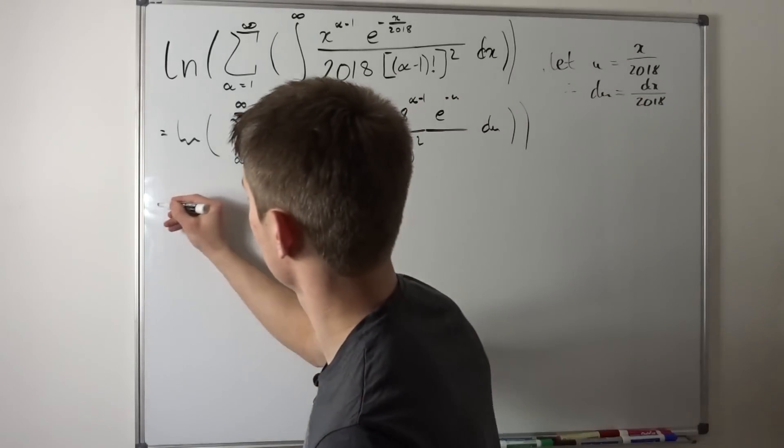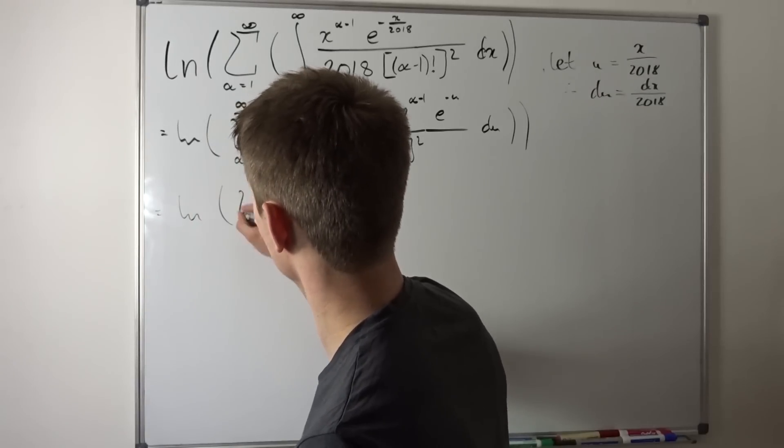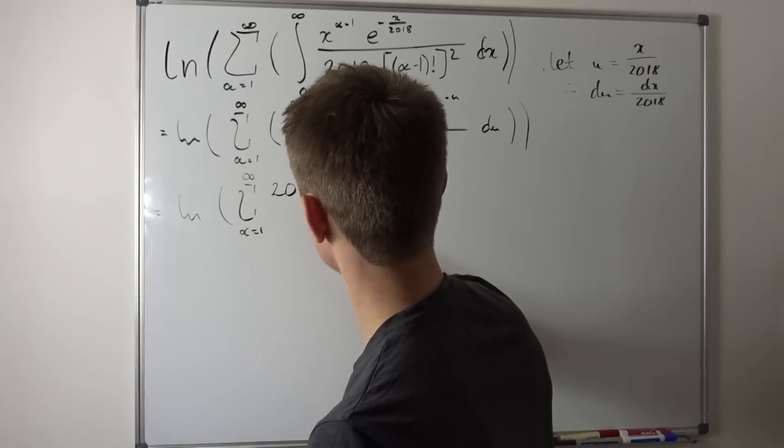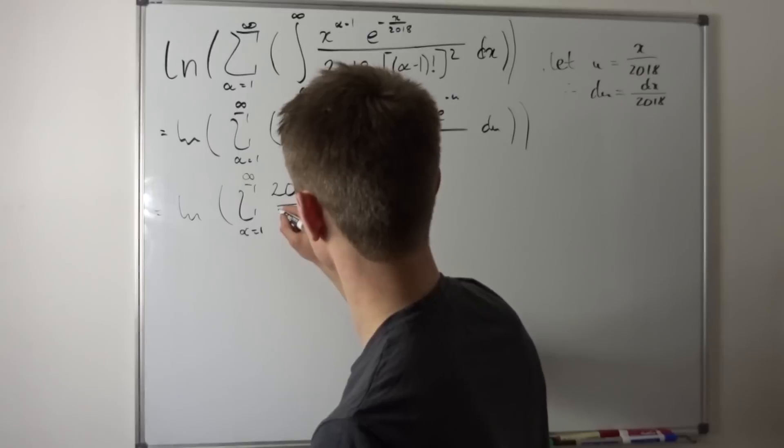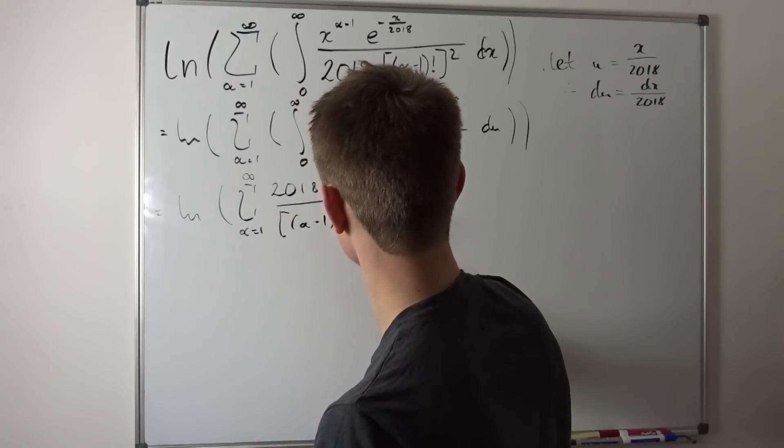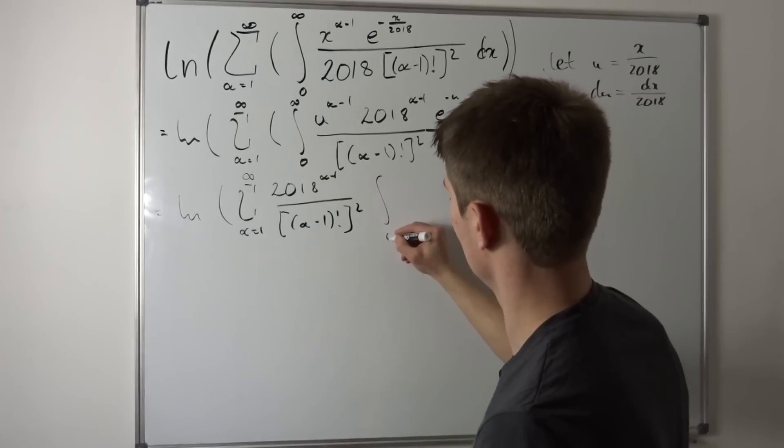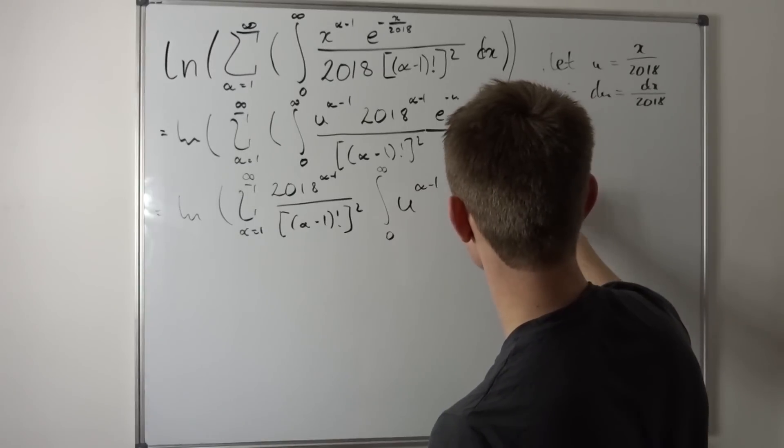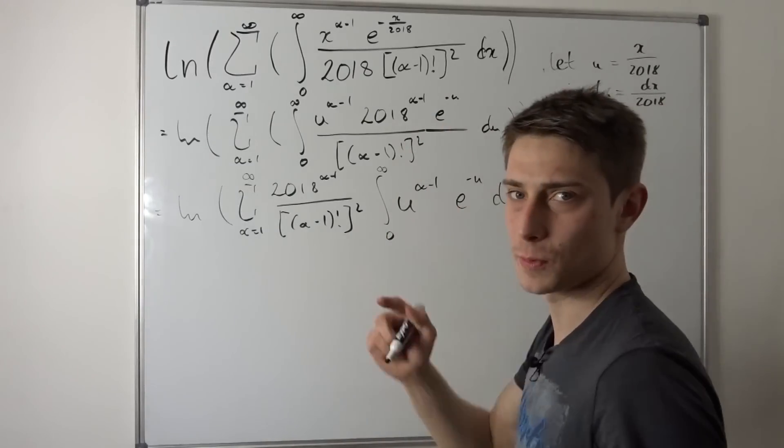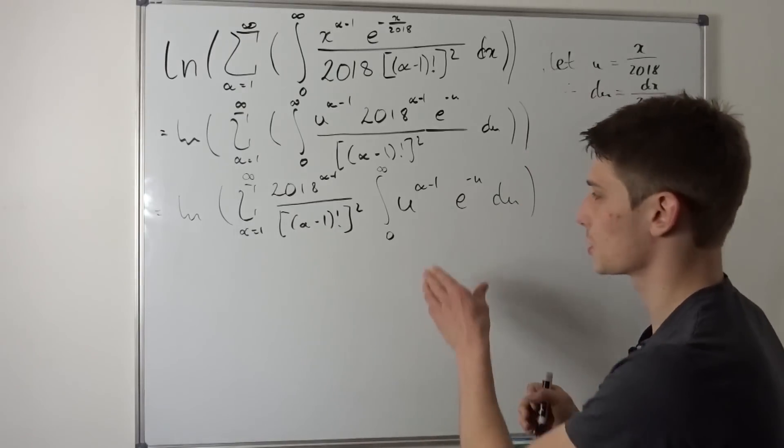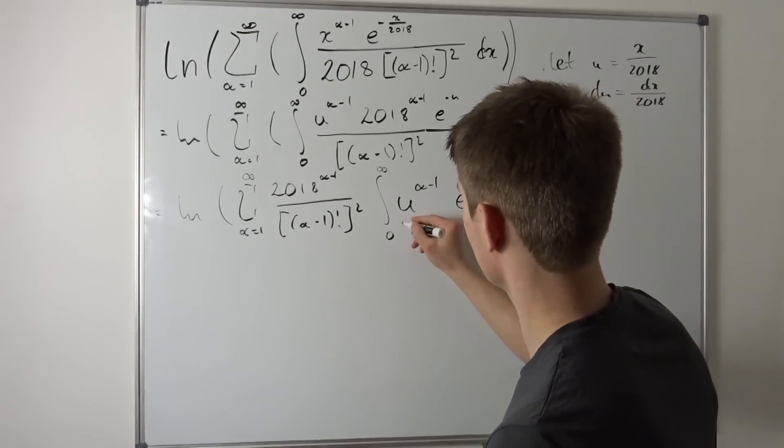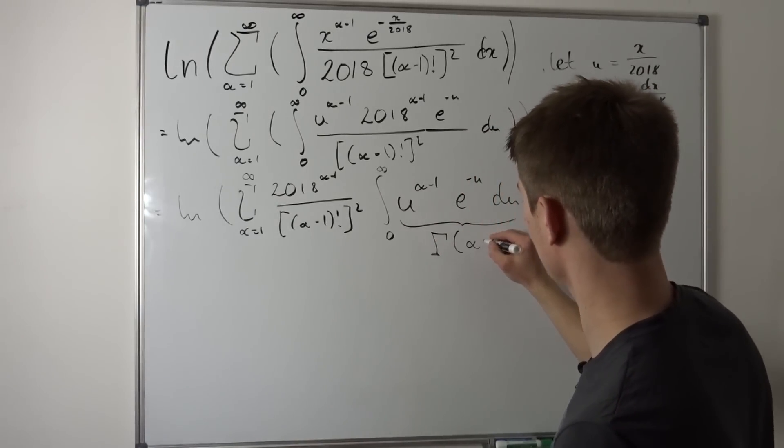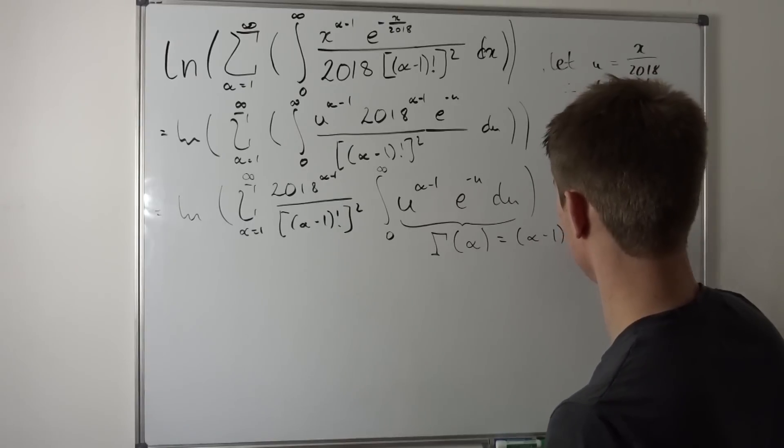So right now we have the natural log of this sum, alpha equals 1 to infinity, of 2018 to the alpha minus 1 over alpha minus 1 factorial, whole thing squared, times the integral from 0 to infinity of u to the alpha minus 1 times e to the minus u, du. And that integral has been designed pretty nicely to be honest, because this right here is just the gamma function. So that's pretty cool, this whole integral is just gamma of alpha in this case, which makes alpha minus 1 factorial.